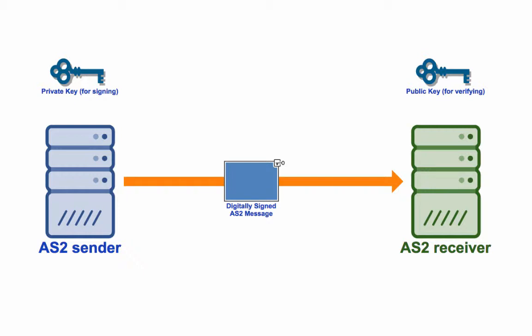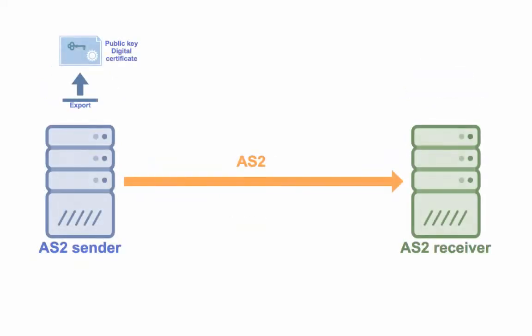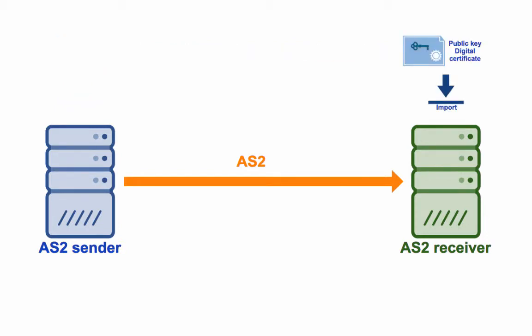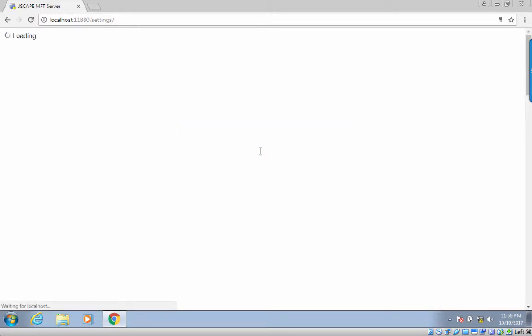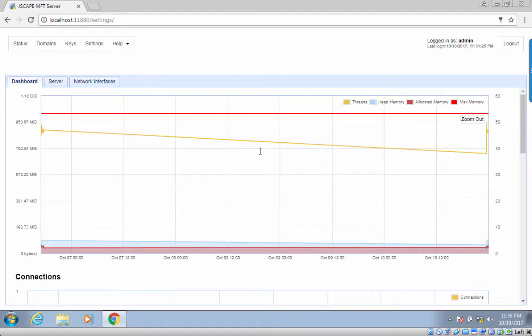Ready with your AS2 server? The main objective on the AS2 server side is to export a digital certificate containing the sending server's public key. This certificate will then be imported on the receiving AS2 server. But before we go about exporting that digital certificate, there are a couple of things we need to configure. First, we need to check whether we already have an existing server key. In the context of JScape MFT server, the server key is an element that consists of a private key and its associated digital certificate and public key.